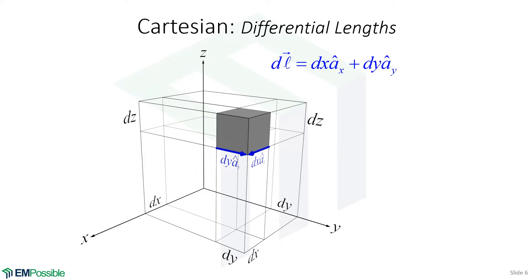Next, we move on to the differential length in the y direction. Again, differential length is a vector with a magnitude and direction. The magnitude is dy, and the direction is the unit vector in the y direction. Last, we have the differential length in the z direction. It's also a vector with a magnitude and direction. The magnitude is dz, and the direction is the unit vector in the z direction. So in one picture, we have all three of our differential lengths.